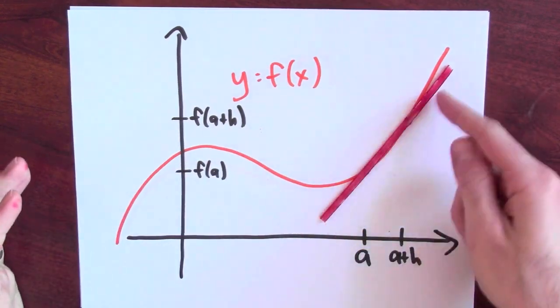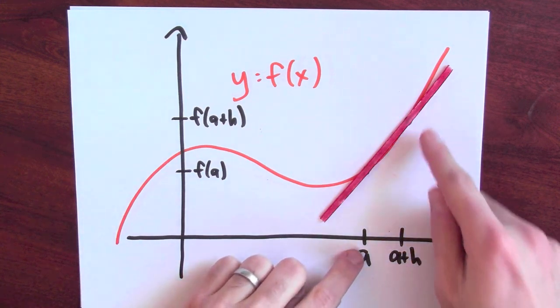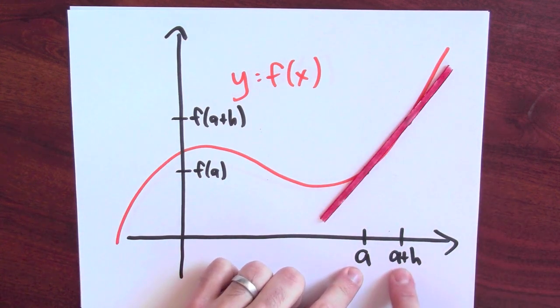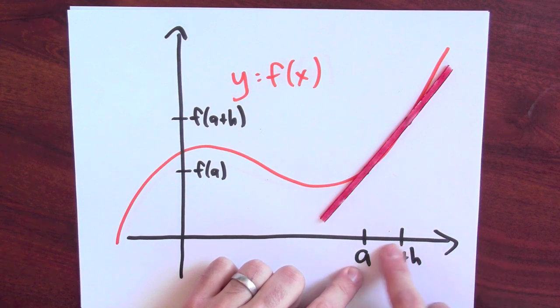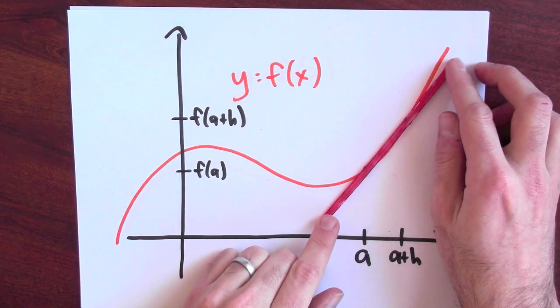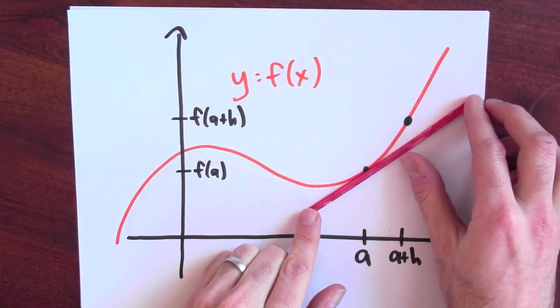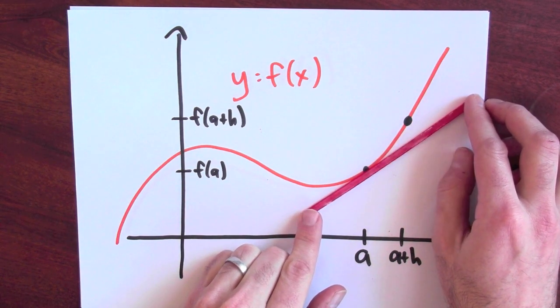What I want to know is what's the slope of that secant line, because I'm going to take the limit as this A plus H point is moved closer to A, as H goes to zero in other words. And that'll make this secant line move closer and closer to the tangent line to the curve.